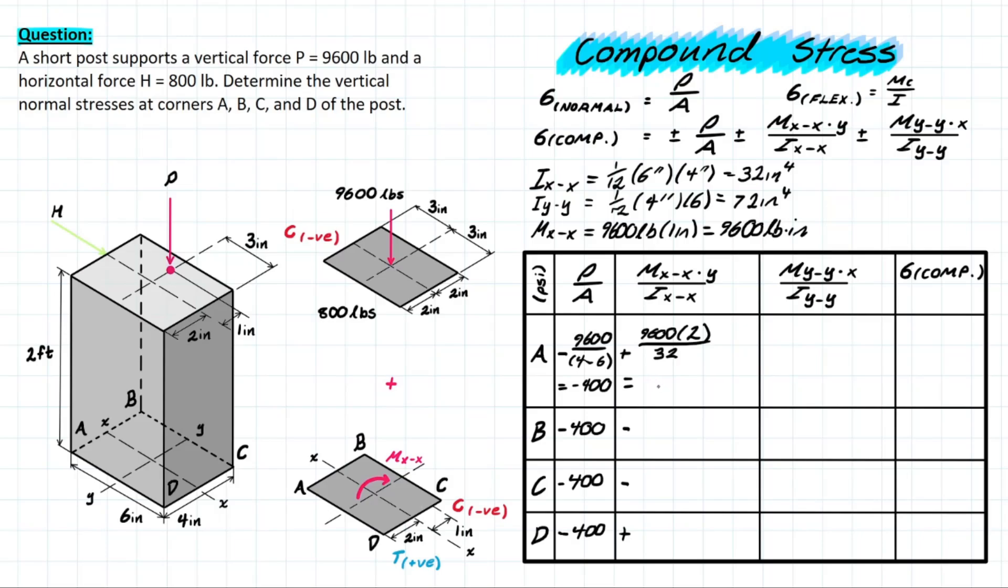And solving for that we're going to be left with a positive value of 600 and once again we just go ahead and plug that in for all these other values as well and we already dealt with the sign convention.